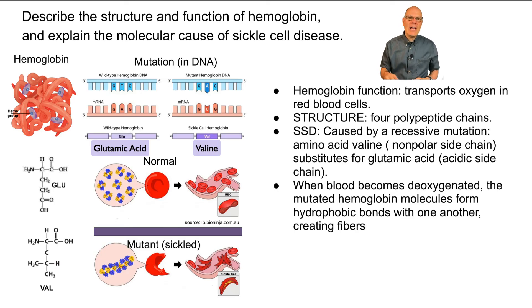And that's an important mutation because glutamic acid is acidic, whereas valine is nonpolar. The result of that is that when blood becomes deoxygenated, those mutated hemoglobin molecules, they form hydrophobic bonds with one another. Well, why? Because they have a hydrophobic amino acid sticking on the outside. And that causes them to do this.